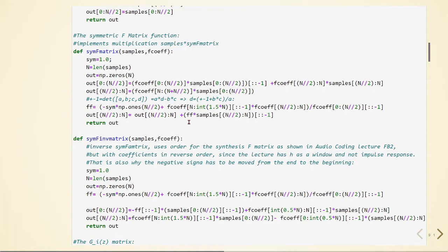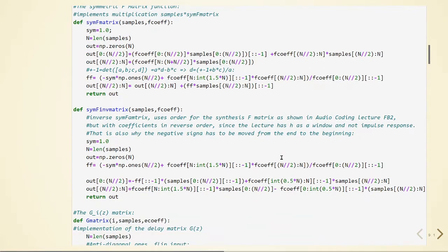Since in the lecture we use H as a window and not as an impulse response, this is also why the negative signal has to be moved from the end to the beginning. In the lecture we explain using H as a window and not as an impulse response. Here we are going to use H as an impulse response and this is why we have this difference.